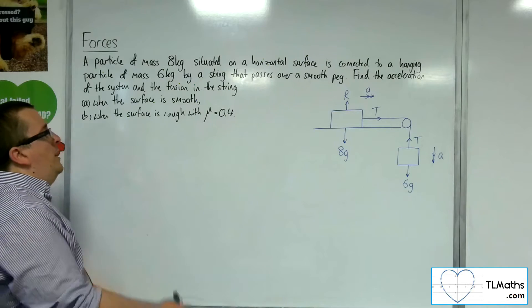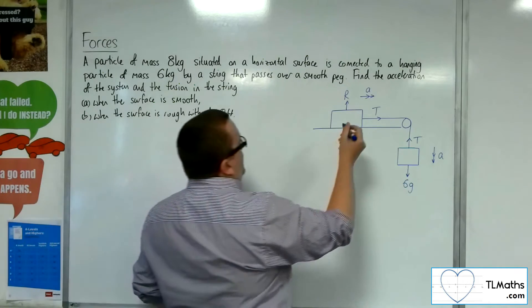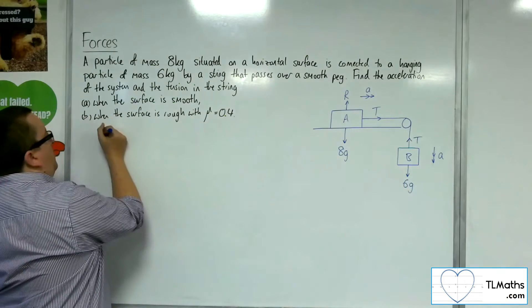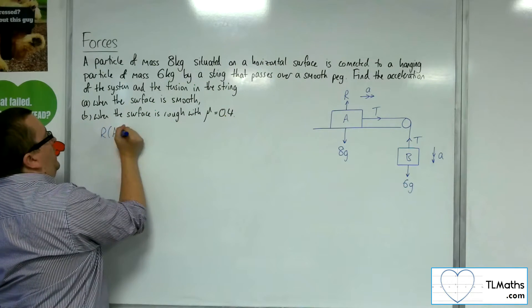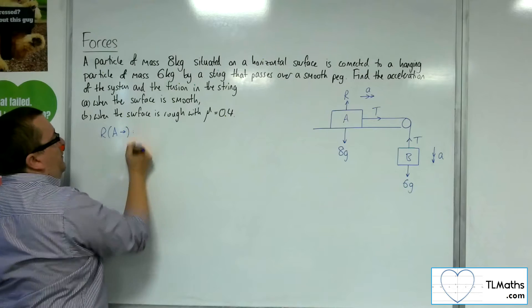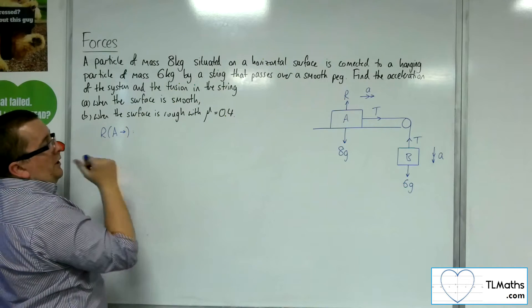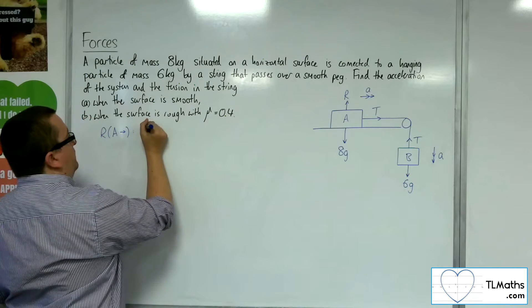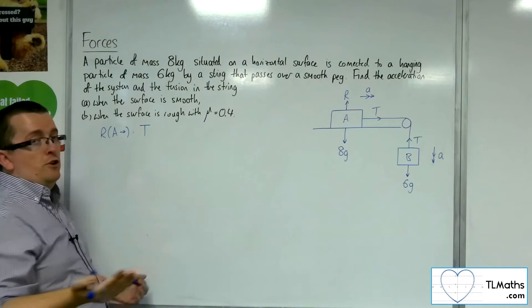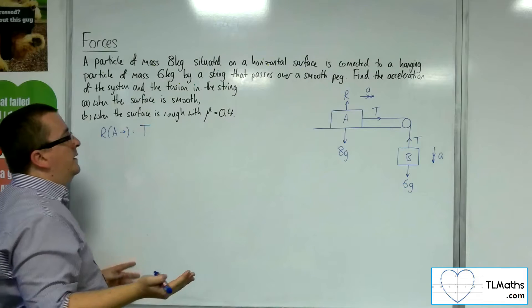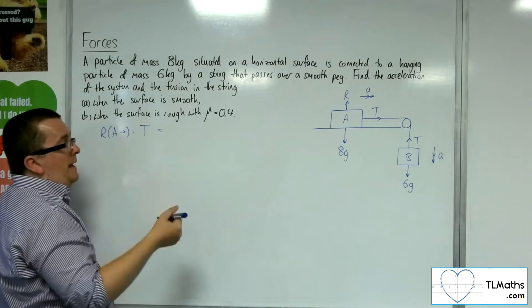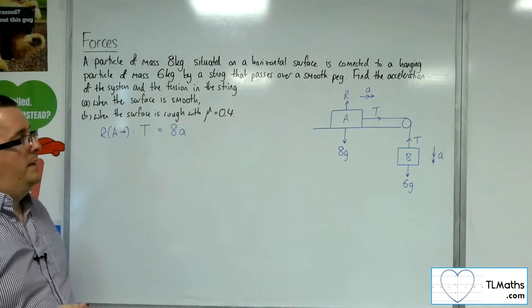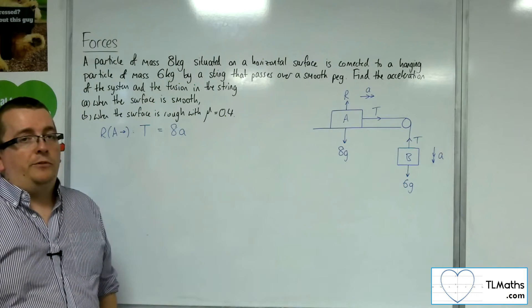So if I resolve, let's call this particle A and that particle B. I'm going to resolve particle A taking to the right as positive. So I've got the tension working towards the right. There's no frictional forces working against that, and that's got to be equal to the mass times the acceleration. So tension has got to be 8 times A.